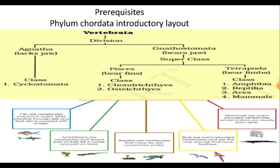The two superclasses are Superclass Pisces, which exclusively comprises fishes that live in water, breathe through gills, have skin covered by scales, and use fins as their locomotor organs. They are cold-blooded animals. The other superclass is Tetrapoda, which includes limb-bearing vertebrates and is further classified into four classes, beginning with Class Amphibia.